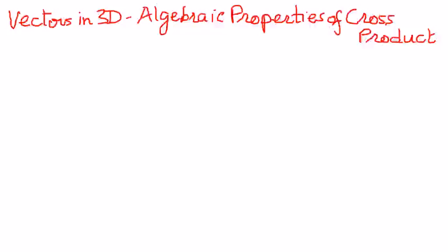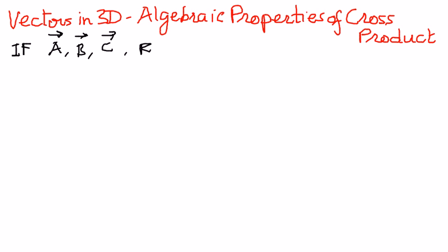Let me explain this. If we have A as a vector, B as another vector, and C as another vector, and if these are vectors in three-space, and if C is also a scalar quantity, then the following properties are true.